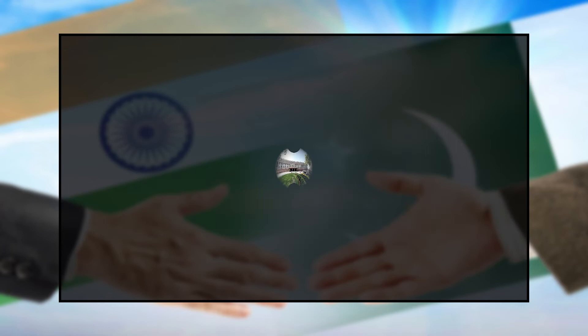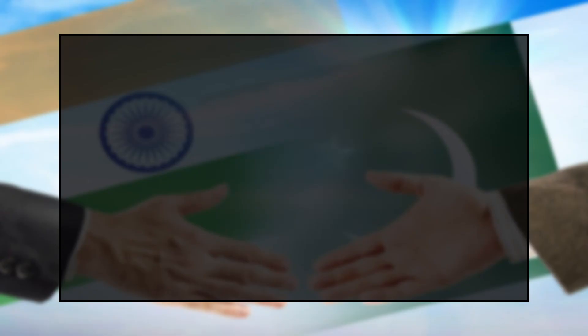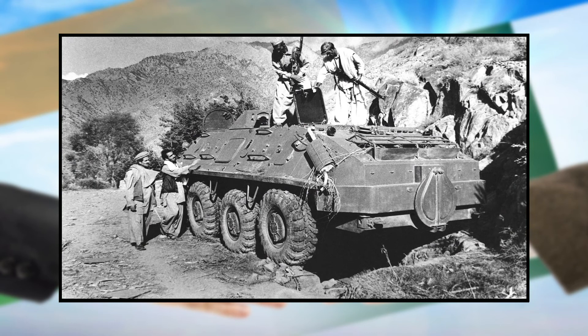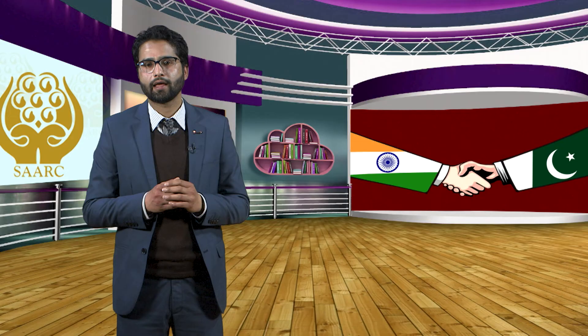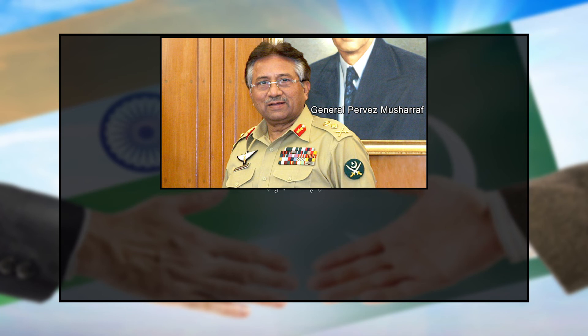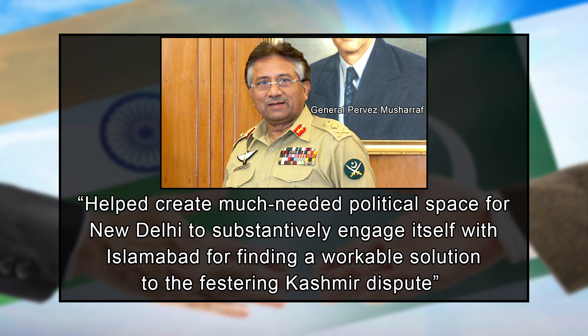After the 13 December 2001 attack on the Indian Parliament, New Delhi initiated a full-scale military mobilization. Fearing a major war between nuclear-armed states and disruption to its war against Al-Qaeda in Afghanistan after 9/11, Washington intervened and exerted diplomatic pressure on New Delhi and Islamabad to scale down. In January 2002, Pakistan's president announced policy reforms condemning radical Islamists for running a state within a state and banned six extremist groups, including LeT and JeM, which were held responsible for the parliament attack. According to analyst Rifat Hussain, by hinting at moving away from UN resolutions on Kashmir and assuring action against anti-India non-state actors, Musharraf 'helped create much-needed political space for New Delhi to substantively engage itself with Islamabad for finding a workable solution to the festering Kashmir dispute.'